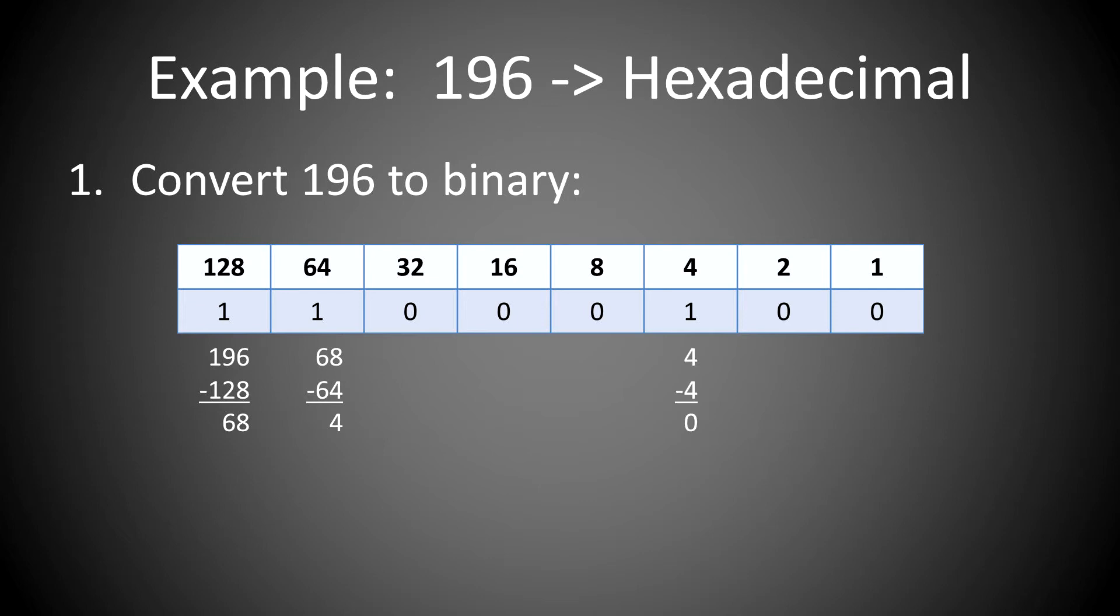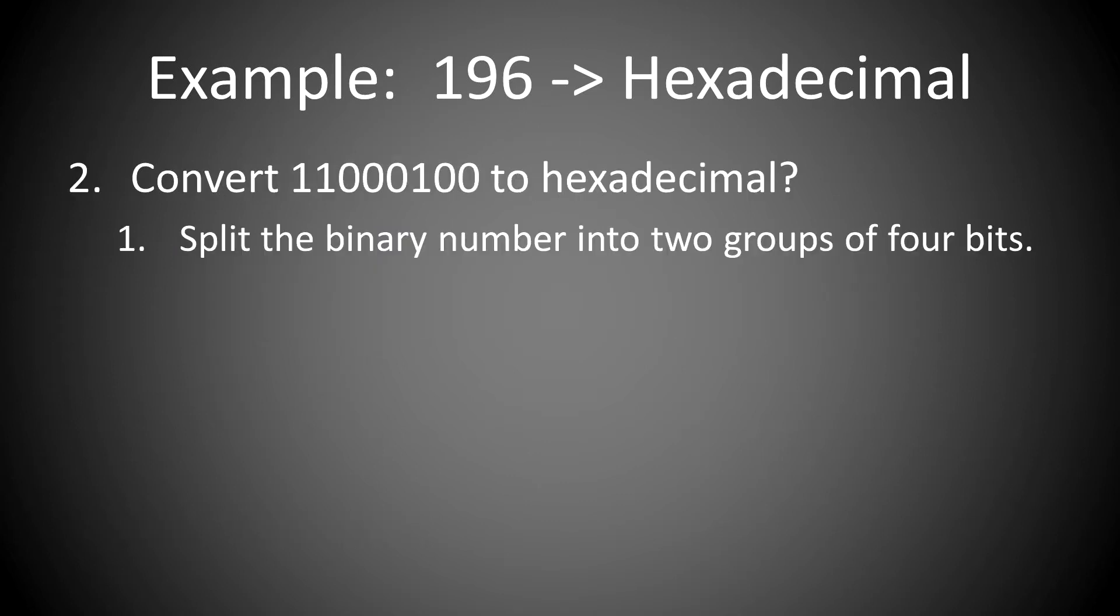So put all these numbers together to get 11000100. Now converting the binary number into hexadecimal, split the binary number into 2 groups of 4 bits, and make sure to keep them in order.